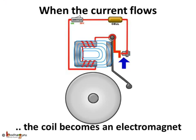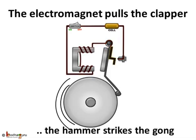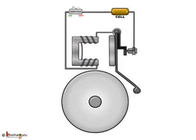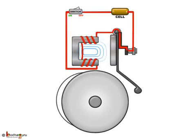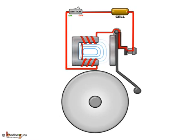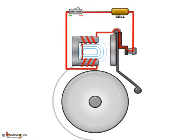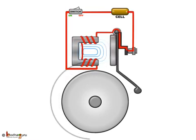This completes the circuit. The current flows in the coil and the hammer strikes the gong again. This process is repeated again and again very quickly. Thus, the hammer strikes the gong every time the circuit is completed. This is how the bell rings.